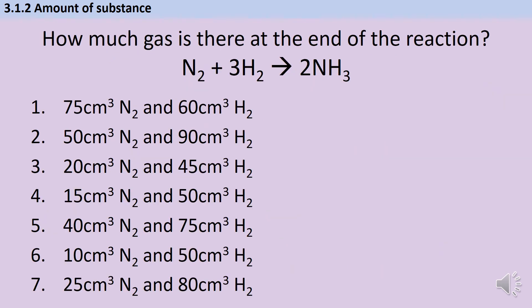Here's one more opportunity to pause the video and make sure you're confident tackling this kind of calculation. All examples use the Haber process, so the maths is the same each time. First, look at nitrogen and hydrogen and work out how much of the other gas each could react with ideally — that tells you which is limiting and which is excess. For the excess: work out how much actually reacts and what's left over. Then use the limiting reactant to calculate the ammonia yield. Add yield plus leftover excess for your total volume.